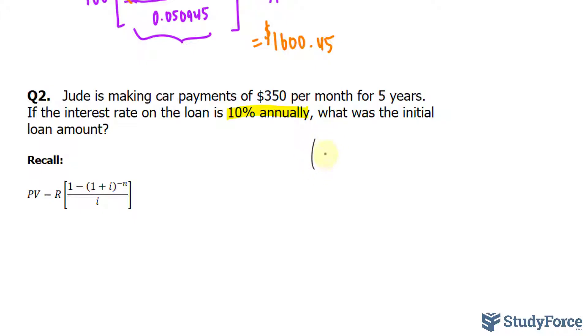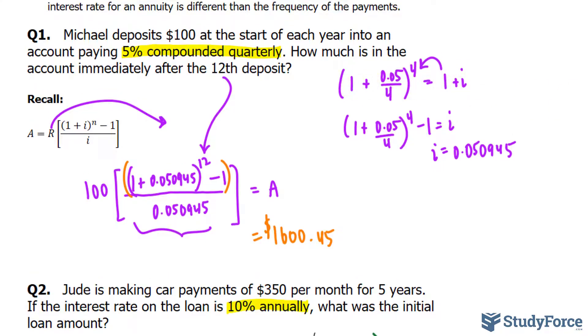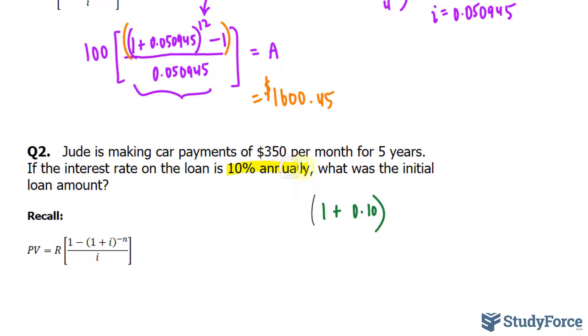So we have 1 plus 0.10, we're doing the same thing as we did before up here. Since this is annually, we don't divide that by anything or raise it to the power of anything other than 1. That's equal to 1 plus our interest rate that we're looking for divided by 12, since we want the equivalent that's monthly compounded, raised to the power of 12. Now we solve for i.